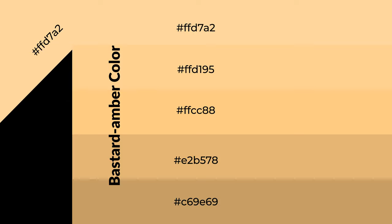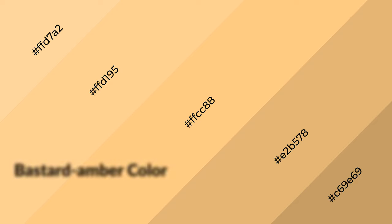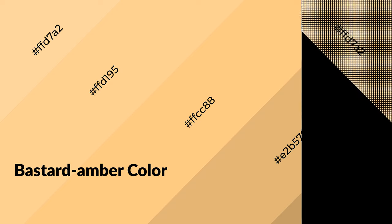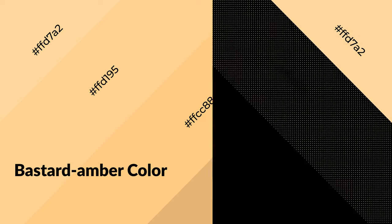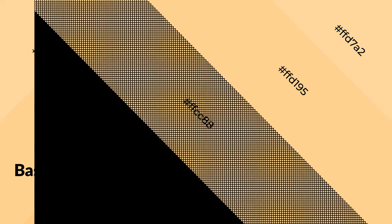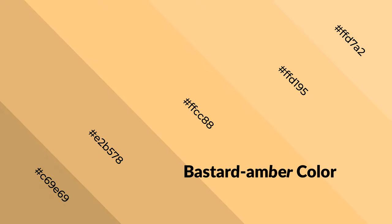To generate shades of a color, we add black to the color. Shades are used in patterns, 3D effects, and layers, and they create depth and drama. Bastard amber is a warm color that emits cozier and active emotions. Warm colors are symbols of warmth, fire, heat, and sunshine, and they also evoke joy, passion, love, and even anger.